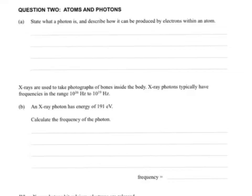So question 2, we're looking at atoms and photons. A says, state what a photon is, and describe how it can be produced by electrons within an atom.